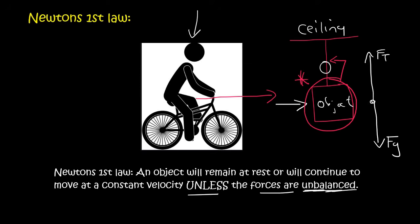or will continue to move at a constant velocity. Velocity is like speed. And if it's constant, remember 20 kilometers per hour, unless the forces are unbalanced.